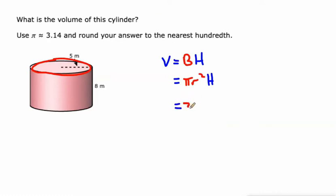Here we go. 3.14 times five is the radius squared times eight. That's the height of the prism.